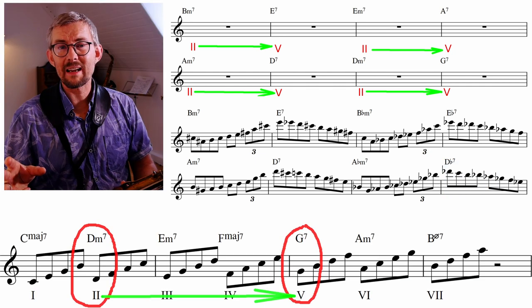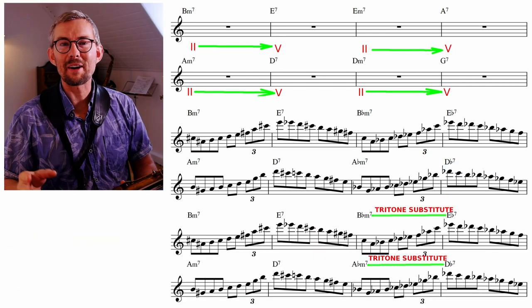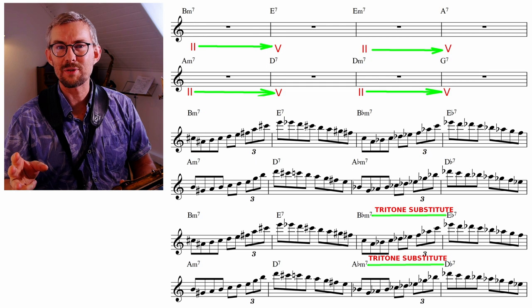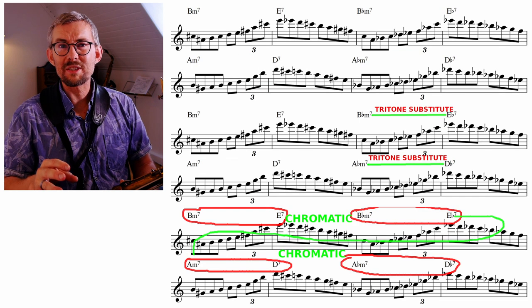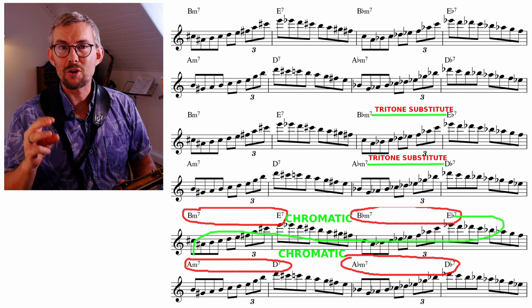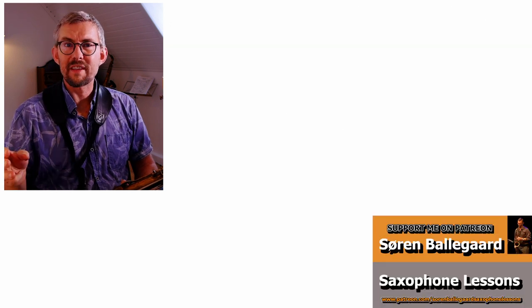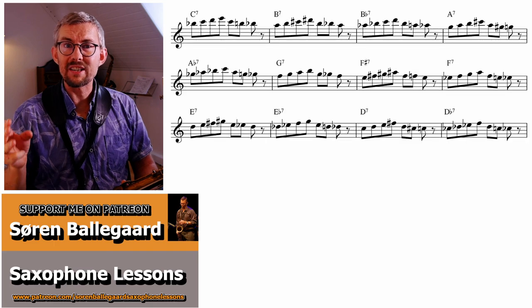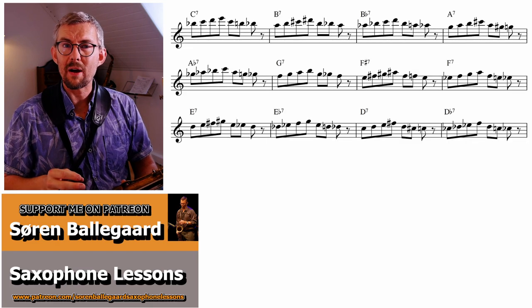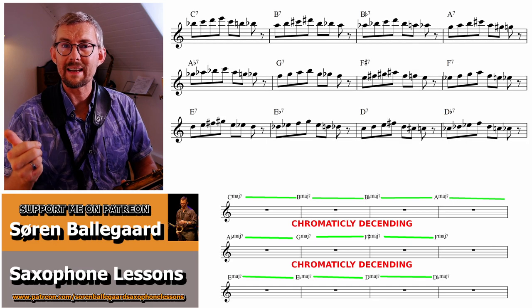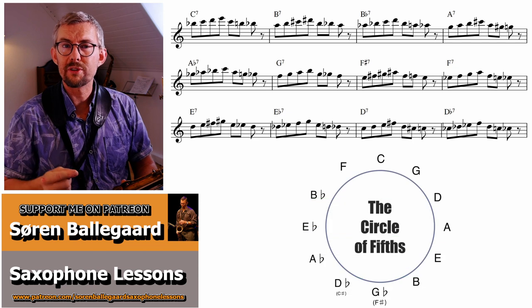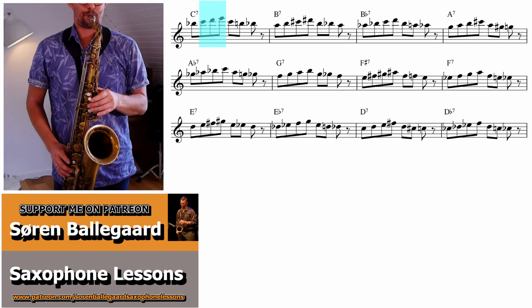Here, playing a lick over the two-five progression in bars three and four, seven and eight, I have tritone-substituted the two-five, which means I get chromatically moving chords. Think of really great licks you like and move these around in all 12 keys, either chromatically or through the circle of fifths.